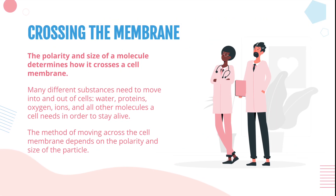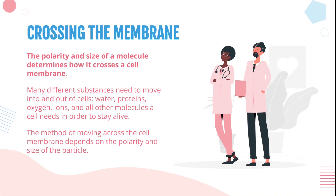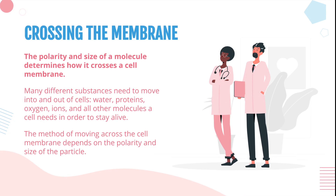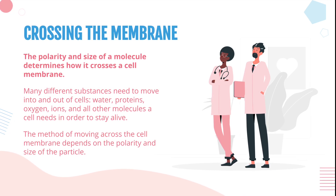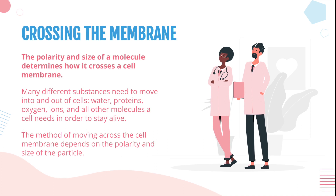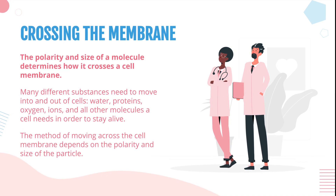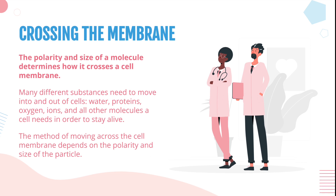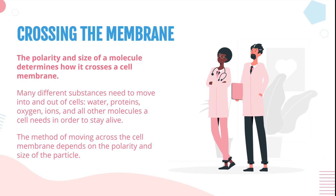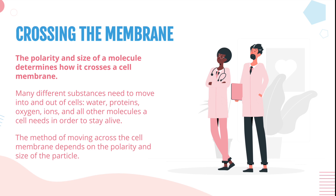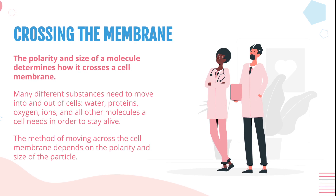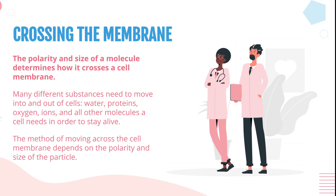Crossing the membrane: the polarity and size of a molecule determines how it crosses a cell membrane. Many different substances need to move into and out of cells — water, proteins, oxygen, ions, and all other molecules a cell needs in order to stay alive. The method of moving across the cell membrane depends on the polarity and size of the particle.